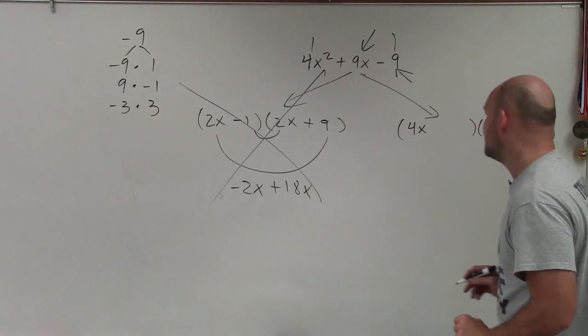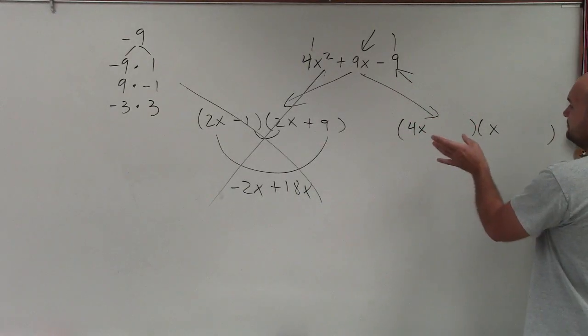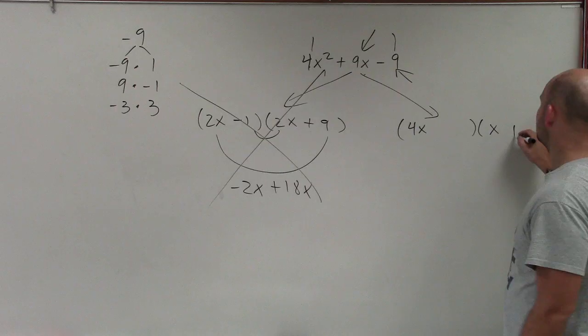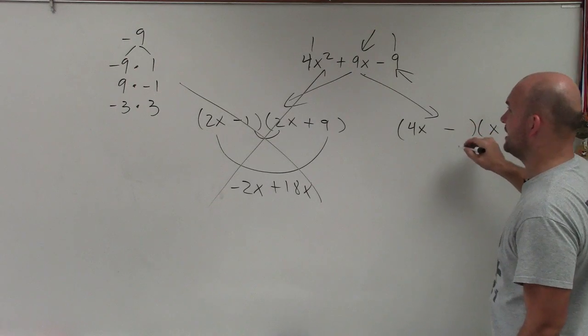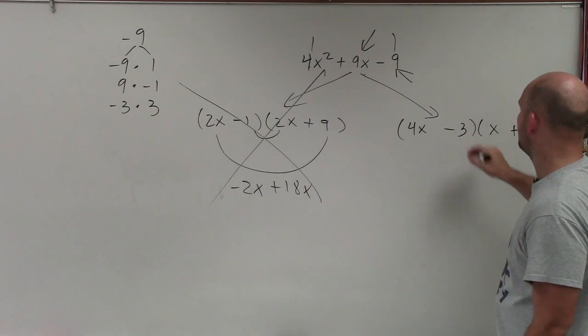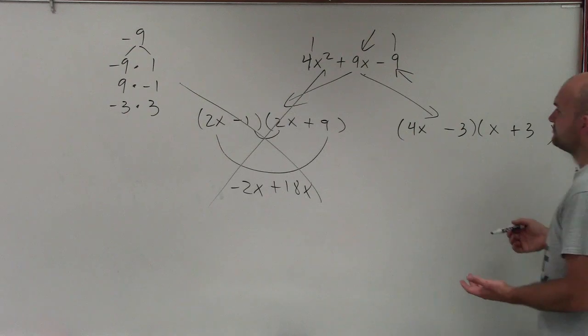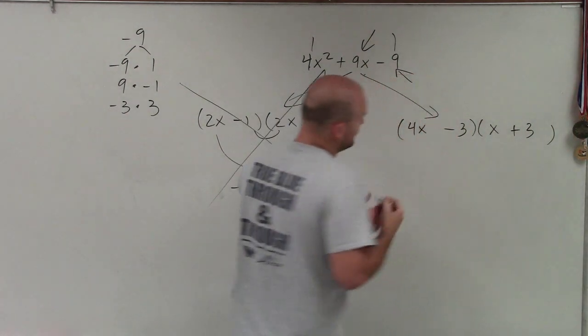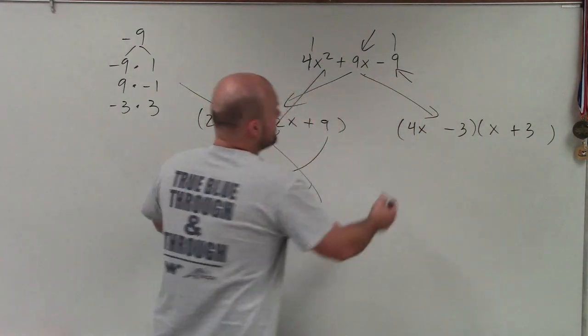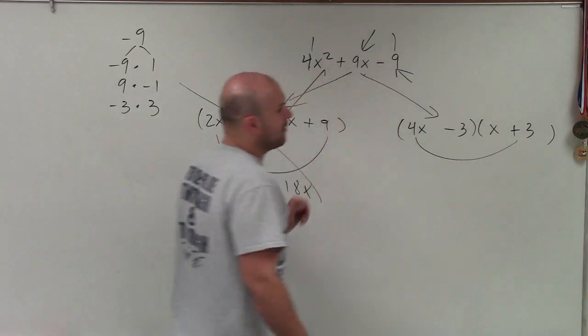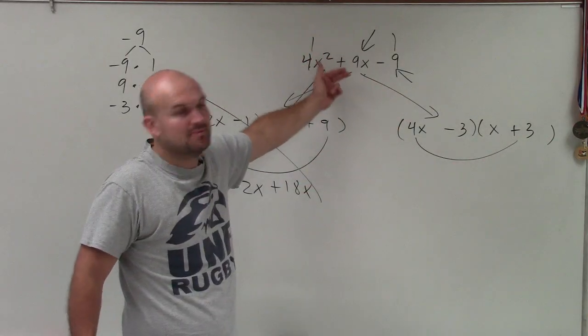So then I look over to the x, and I say, let's try positive 3 and negative 3. The reason I put the positive over here is because I've got to multiply 4x times 3. And I want the larger number to be positive.